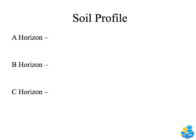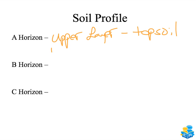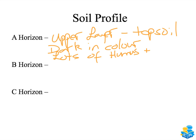Each of these layers make up the soil profile and students must know the characteristics of each. The A horizon is the upper topsoil layer. It is dark in colour and has lots of humus and micro-organisms present in this layer.